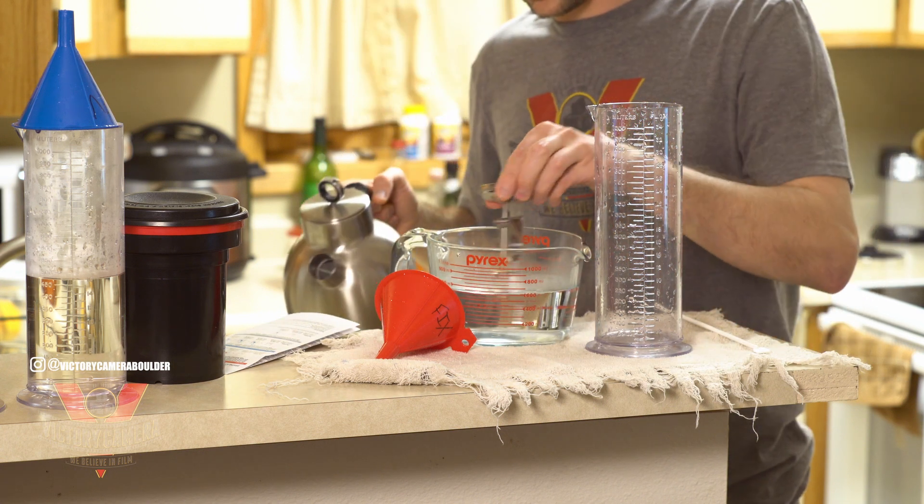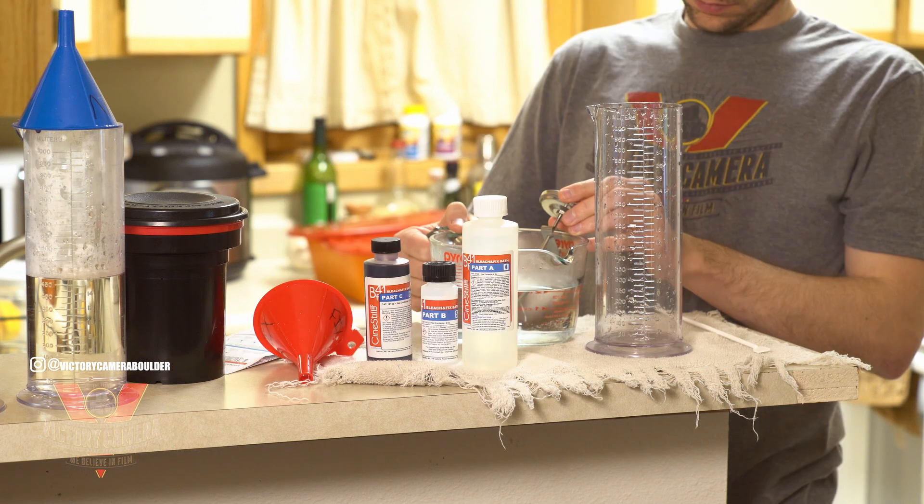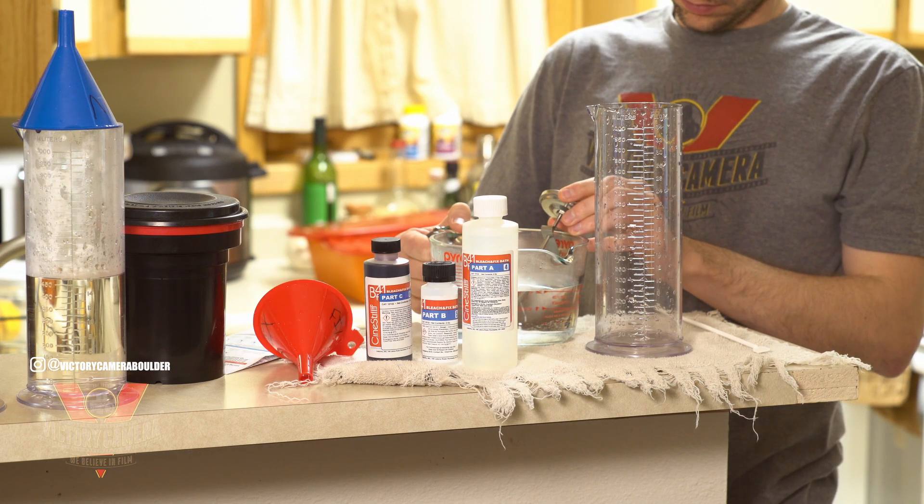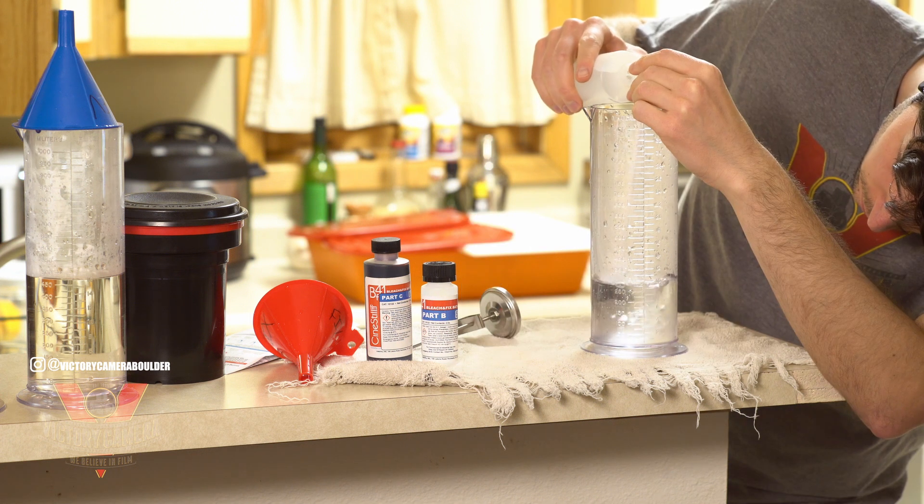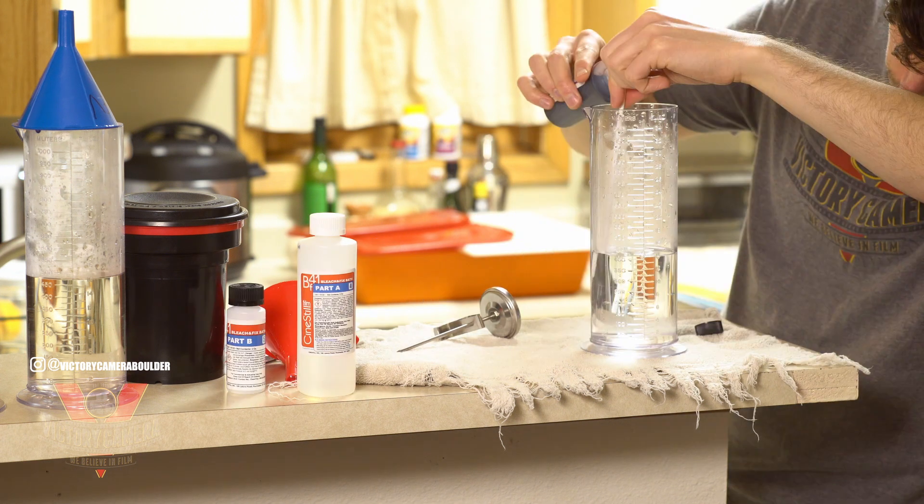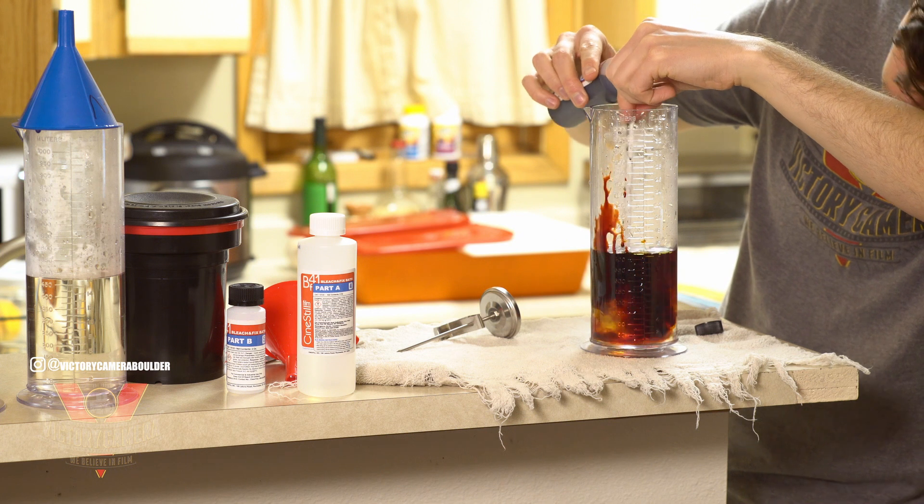There's some debate about combined versus separate bleach and fix, but for my money, Cinestill's formula works great. Starting with 9 ounces of 125 degree water, I'll mix the indicated volumes of parts A, B, and C one at a time, just like I did for the developer.